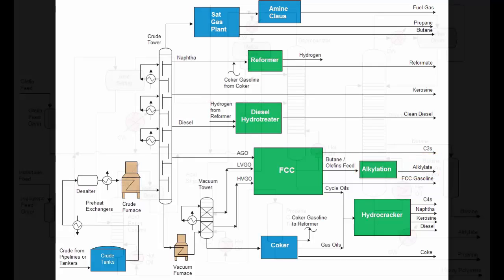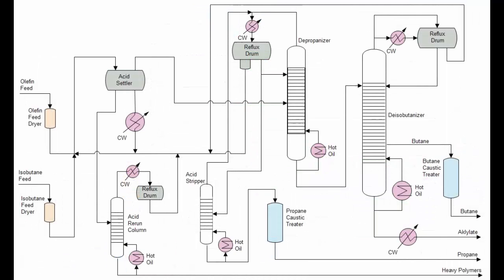There are two types of alkylation units commercially available and in operation today. One is based on a sulfuric acid catalyst, while the other is based on hydrofluoric acid. These units share many similarities.